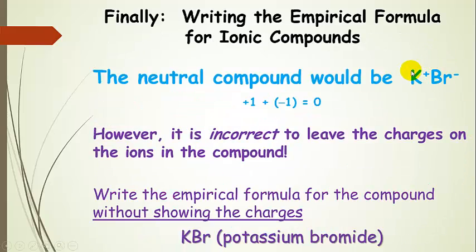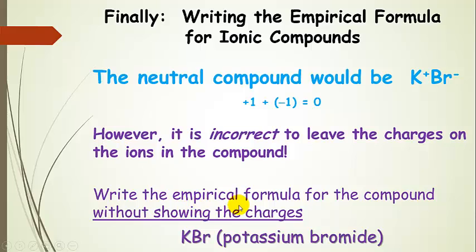So our neutral compound would look like this — there's our potassium cation, there's our bromine anion. If we add the charges together, they get zero. But it's incorrect to leave the charges written on the compound, because you're showing that it's overall zero. Chemists know that potassium is plus 1 and bromide is minus 1, so you just write the empirical formula without showing the charges — not with charges, just like this: KBr, which is called potassium bromide. We'll learn how to name those a little bit later.